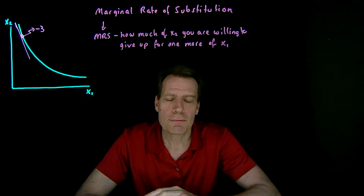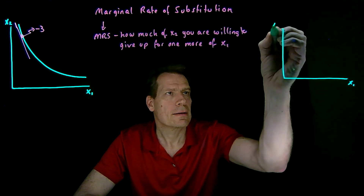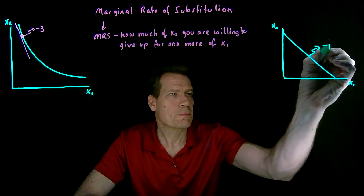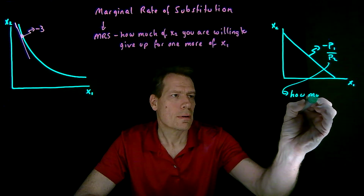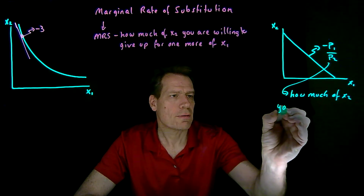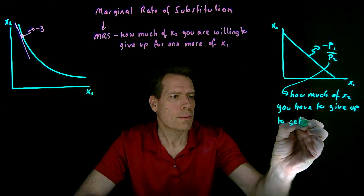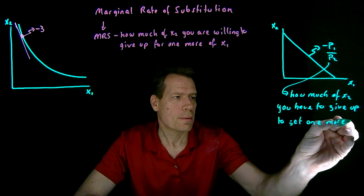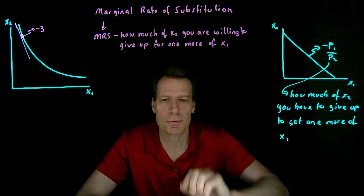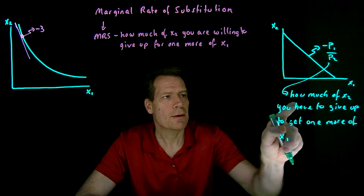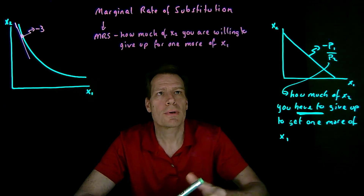That sounds a little similar to what we did for the slope of a budget line or budget constraint. When we did budget lines, we had a line whose slope was minus p1 over p2, and we said that slope is how much of x2 you have to give up to get 1 more of x1. But notice the subtle difference in wording: with the budget line, it's how much of x2 you have to give up.